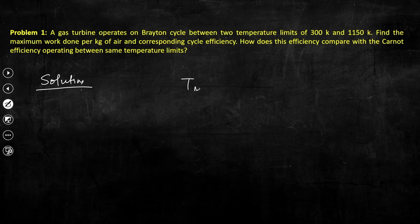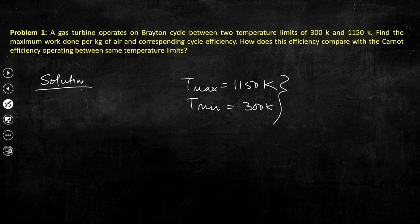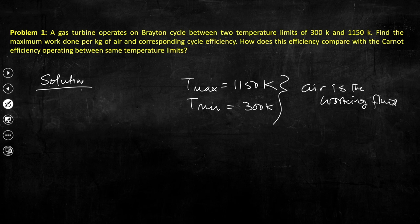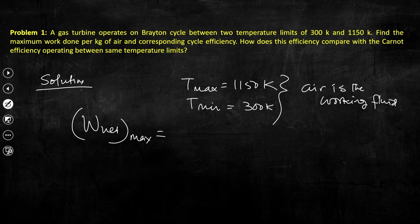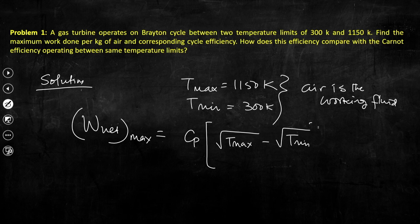It is given that T_max = 1150 K and T_min = 300 K. We need to calculate the maximum work done per kg of air. As established in a previous class, the work done corresponding to the optimum pressure ratio is W_net_max = Cp × (√T_max − √T_min)².